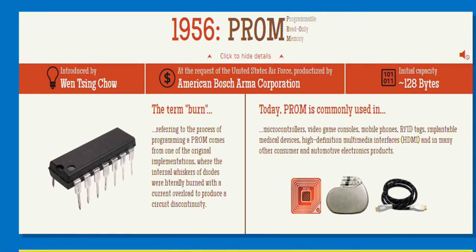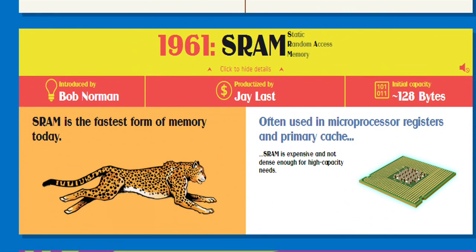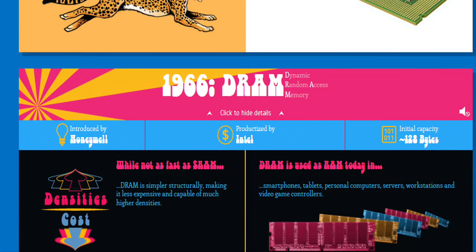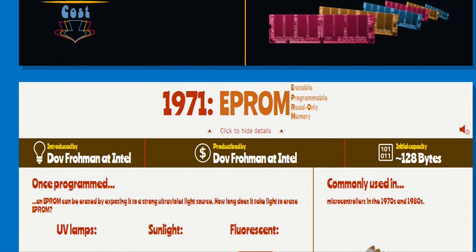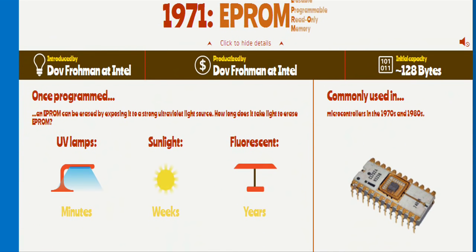For example, retailers may use 3D Crosspoint technology to more quickly identify fraud reduction patterns in financial transactions. Healthcare researchers could process and analyze larger datasets in real-time, accelerating complex tasks such as genetic analysis and disease tracking.